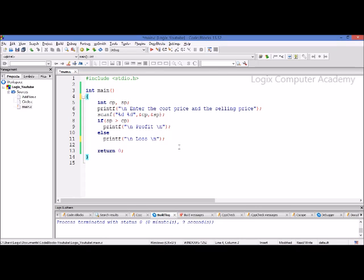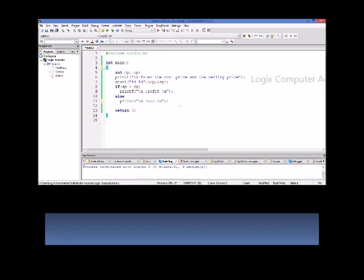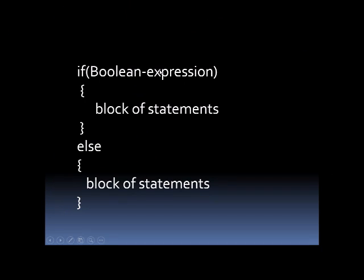Let's see how this if statement is written with the help of a flowchart. The format of the if statement is: the word 'if' and then the boolean expression — that is, the condition — which will be put in parenthesis. If this expression is true, then the block of statements under if will be executed, else the block of statements under else will be executed. It's not necessary that every if statement has to have an else statement; we can write an if statement by itself.